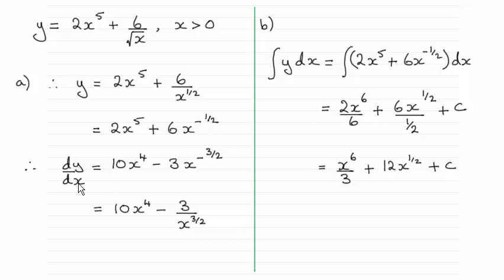So therefore, we get dy by dx equals, and in the usual way, we do 2 times 5, which is the 10, and reduce the power by 1. So that's going to go down to x to the power 4.